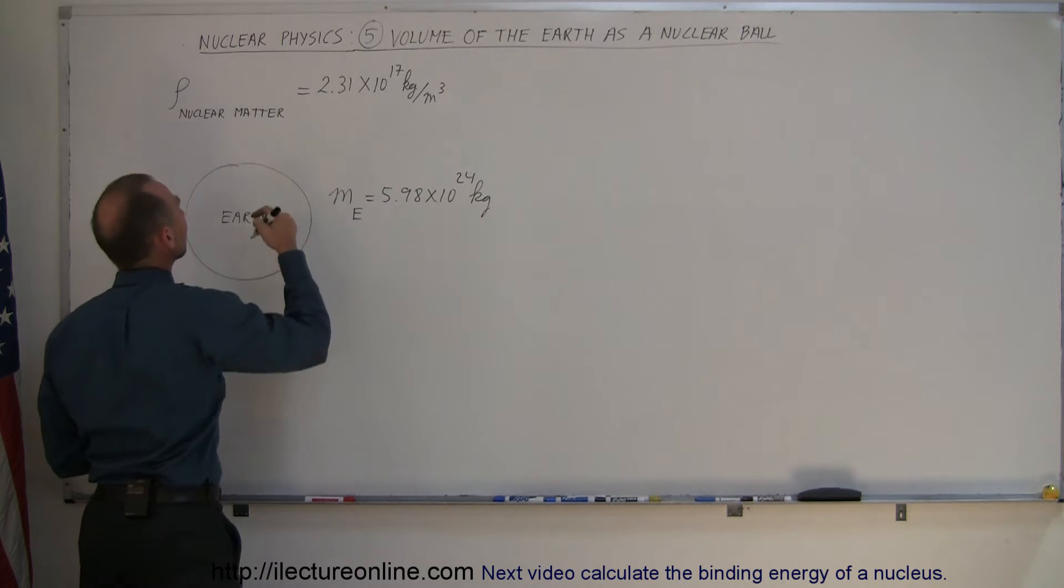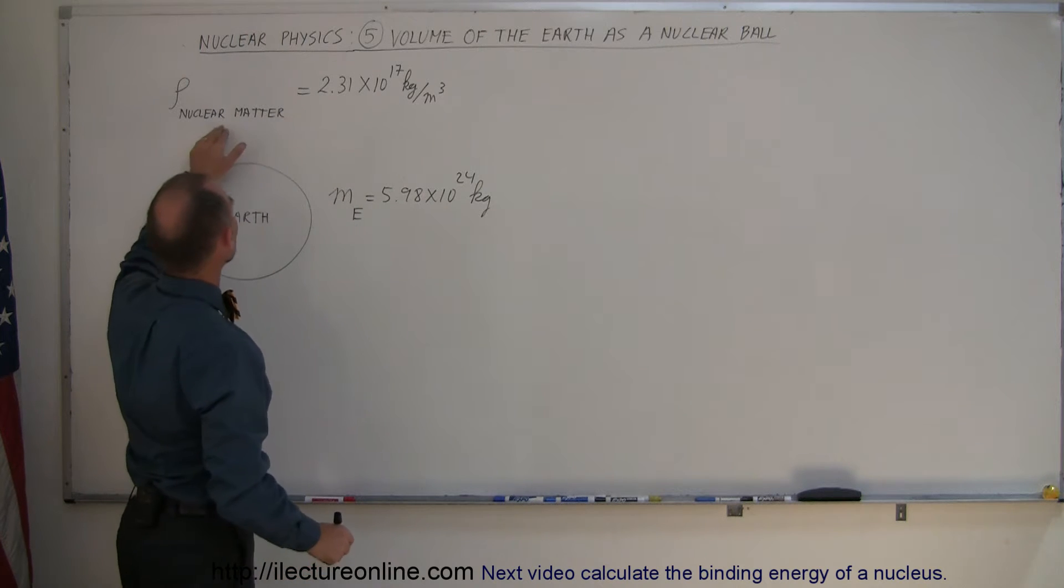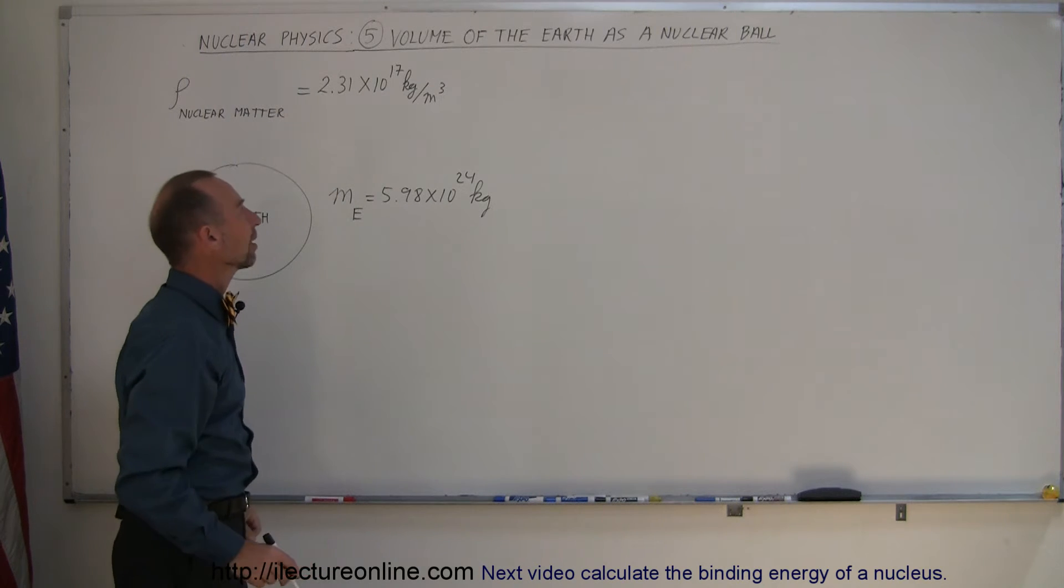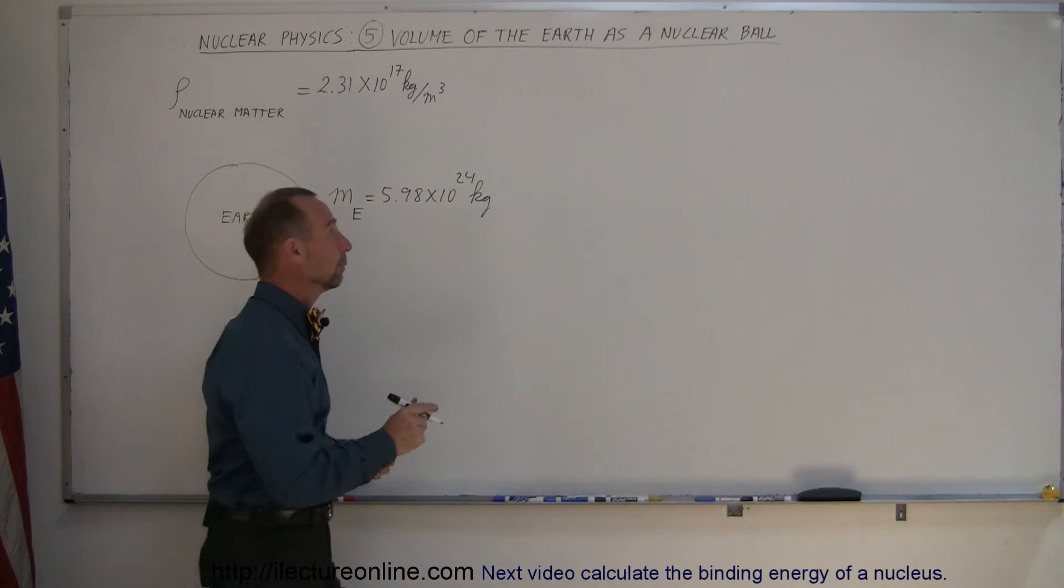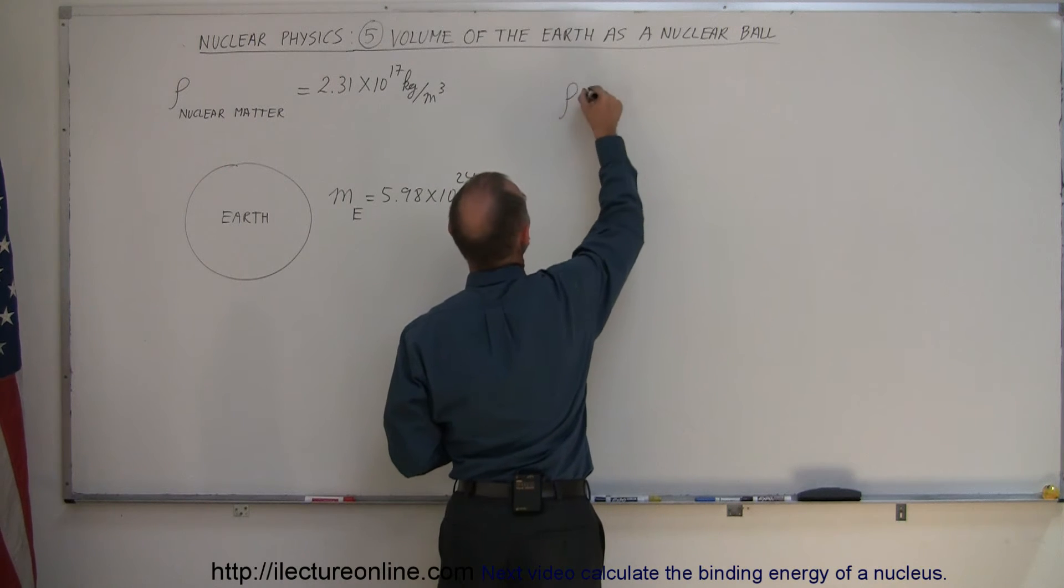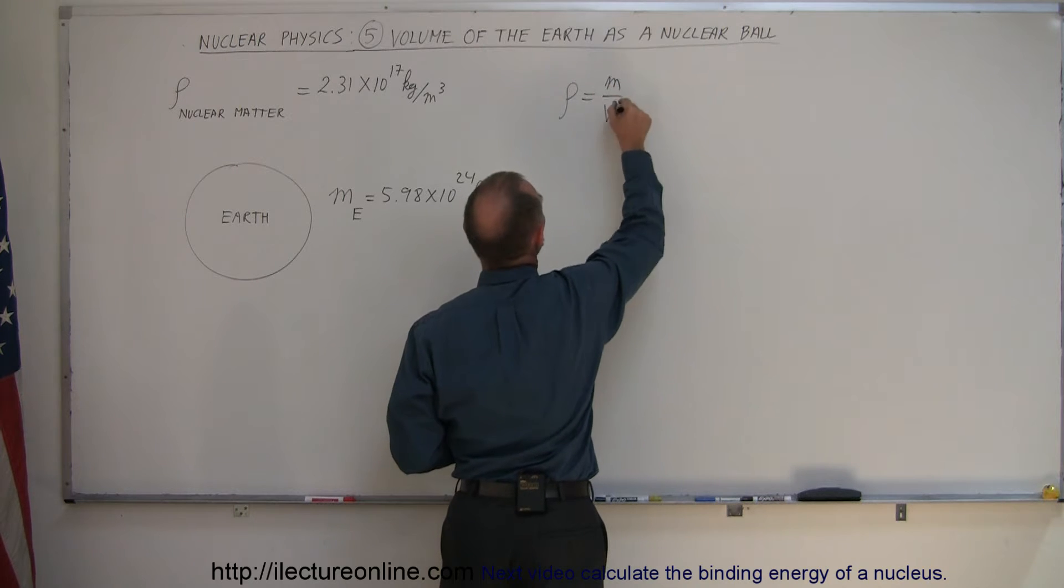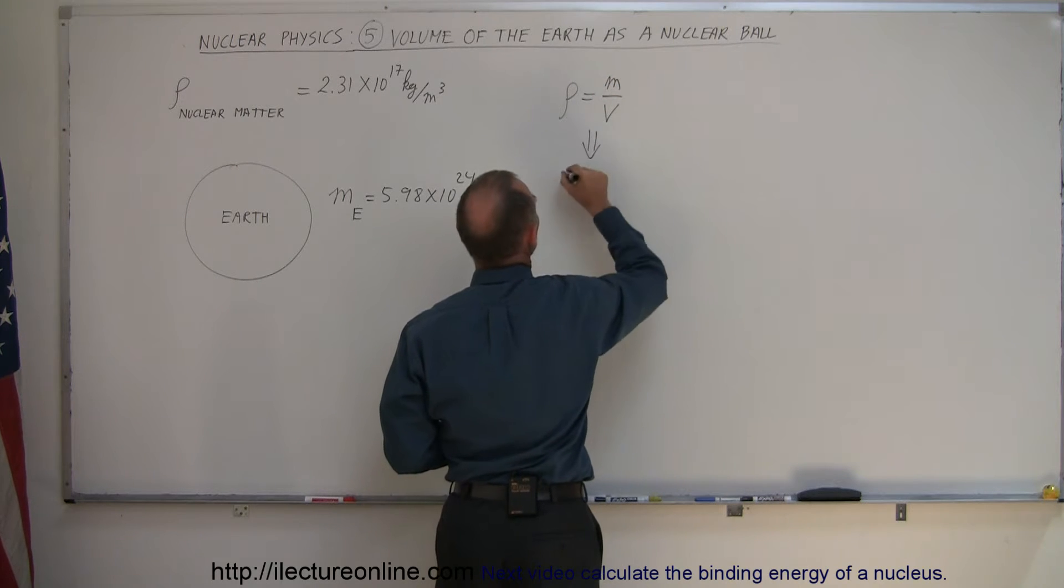And we also know from a previous video that the density of nuclear matter is 2.31 times 10 to the 17 kilograms per cubic meter. So what would be the volume? Remember that the equation for density is equal to mass divided by volume, which means that the volume is equal to the mass divided by the density.